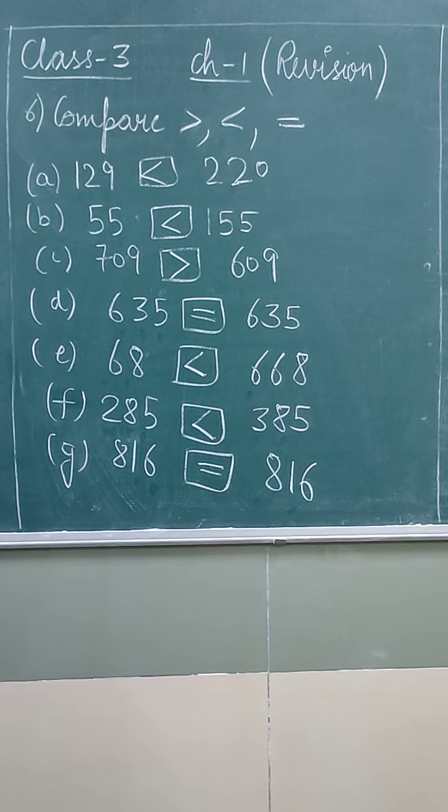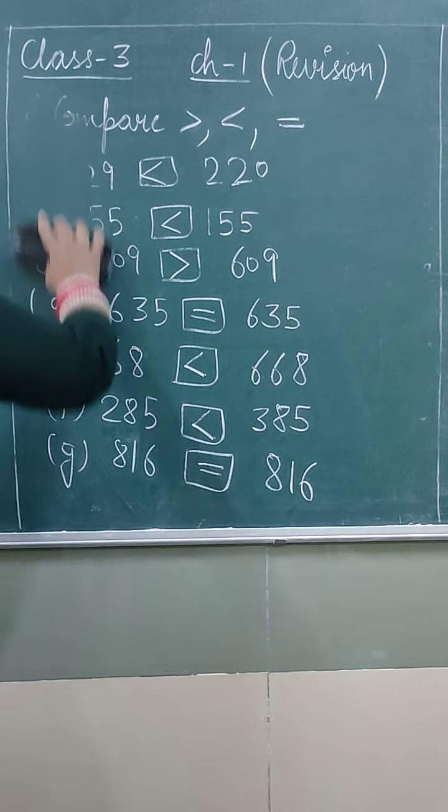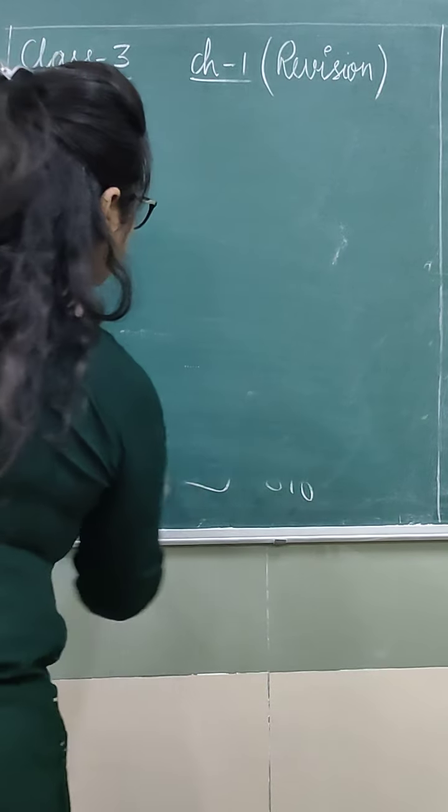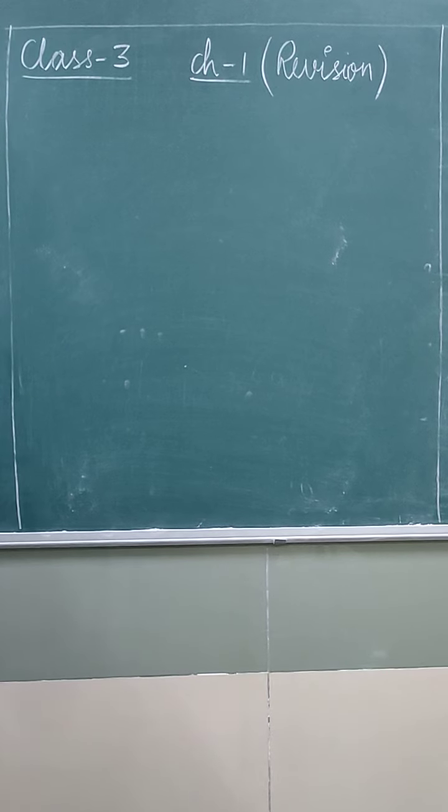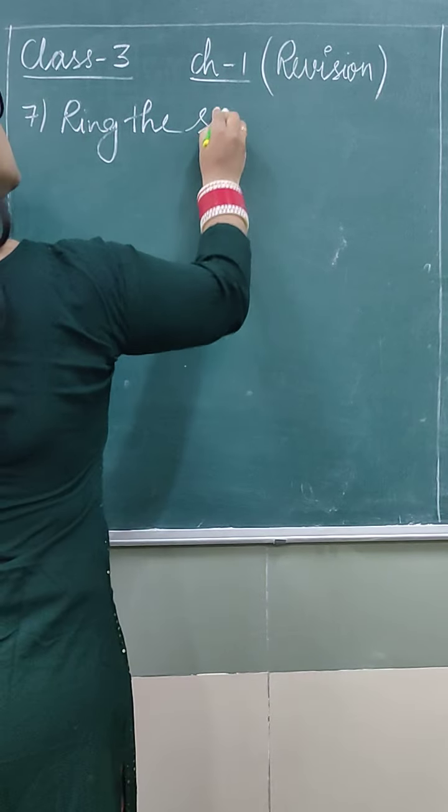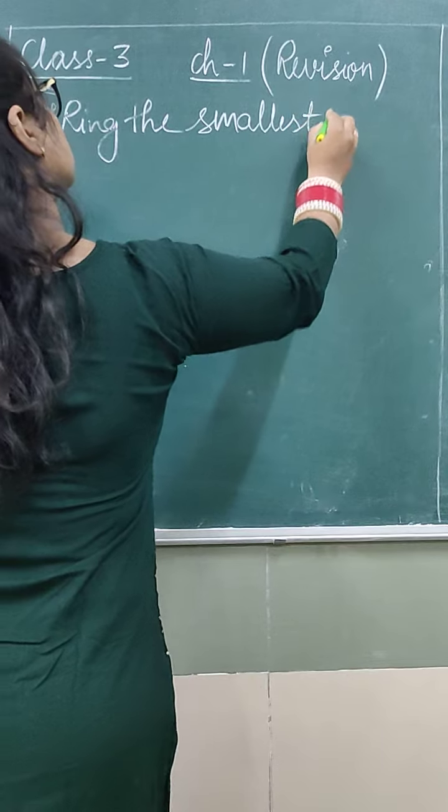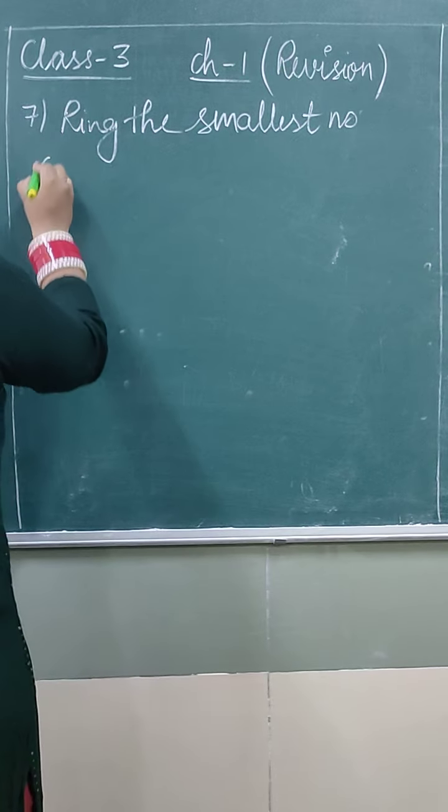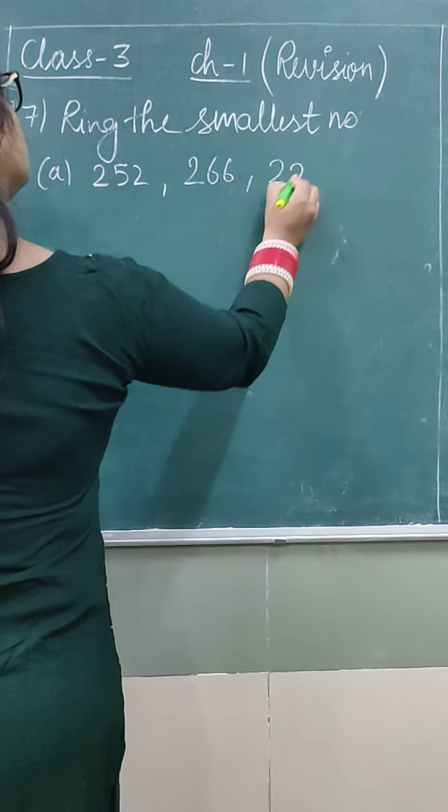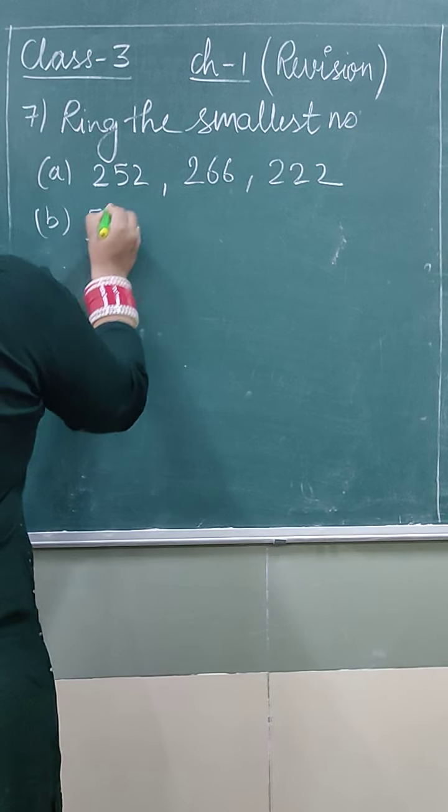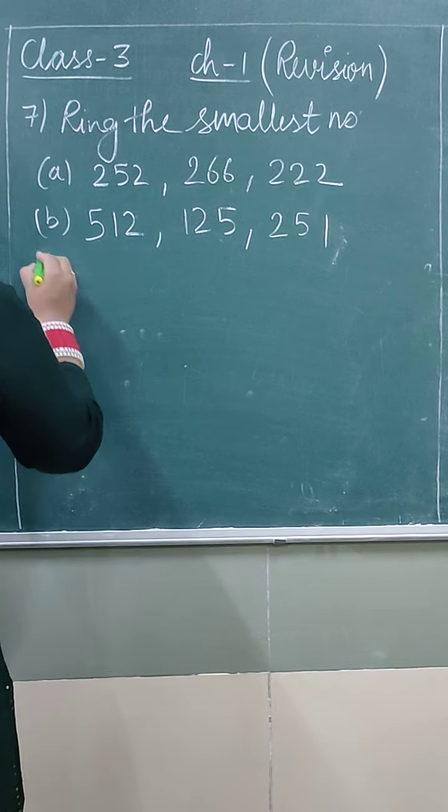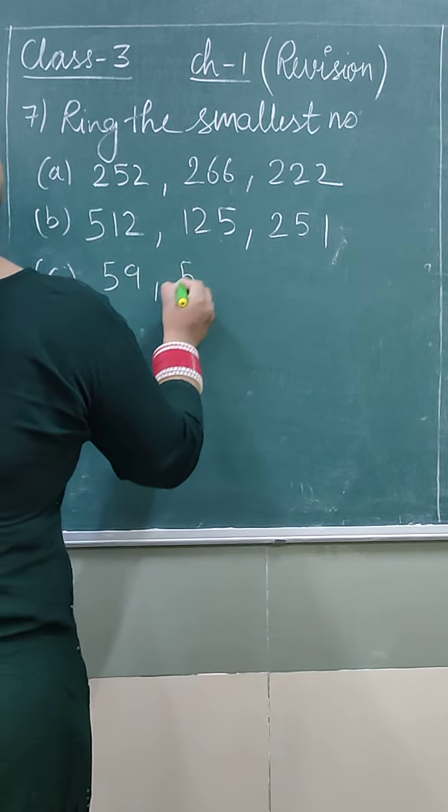Now we are coming to question 7. Ring the smallest number. In A part we have 252, 266, 222. In B part we have 512, 125, 251.